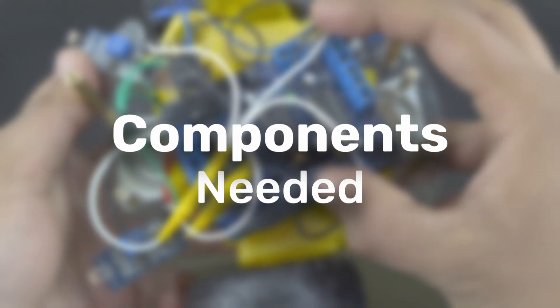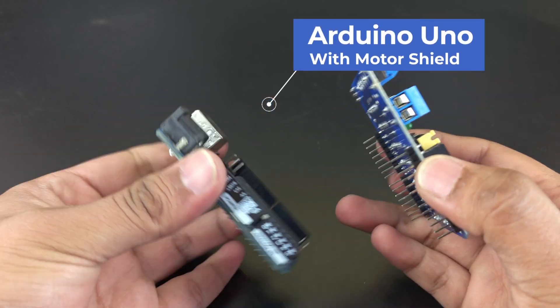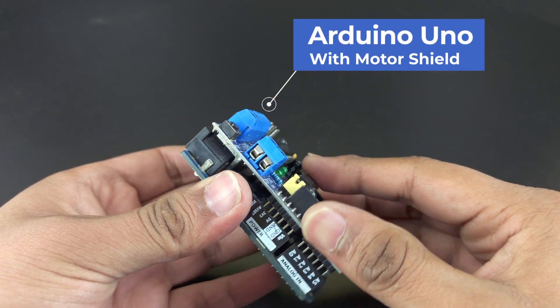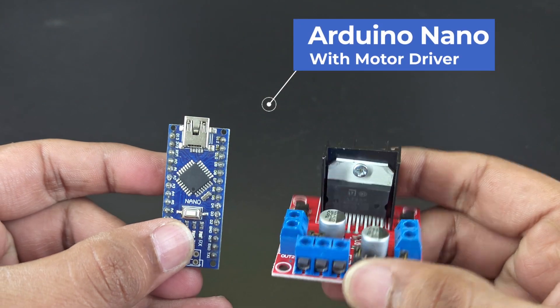First let's talk about what you'll need. For this project you'll need an Arduino Uno and a motor shield. You can also use a nano and a motor driver.